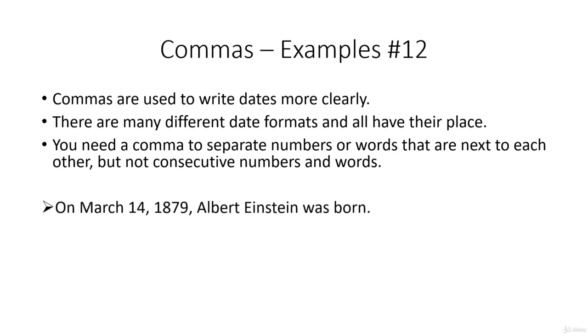On March the 14th, 1879, Albert Einstein was born. So we have two commas here. On March the 14th, 1879, so we have two numbers next to each other, namely the 14 and the 1879. They are separated by a comma. The second comma is because the on March the 14th, 1879 acts as an introductory phrase, which is separated by a comma from the rest of the sentence.